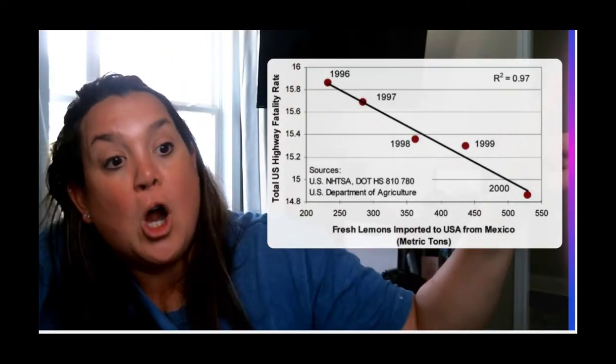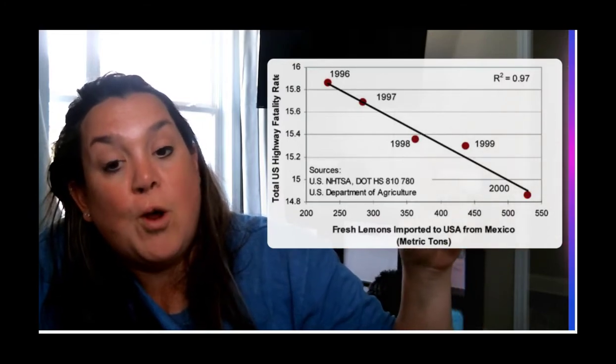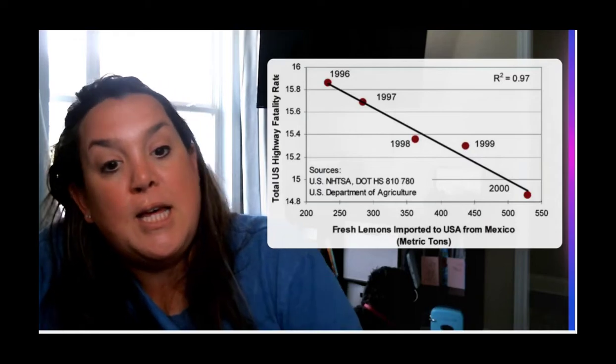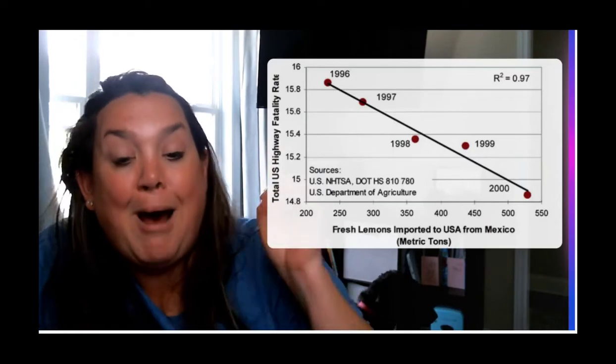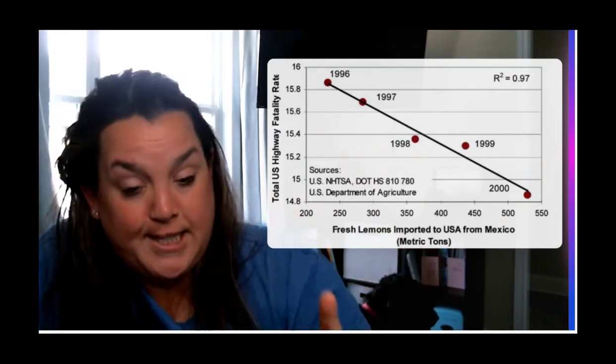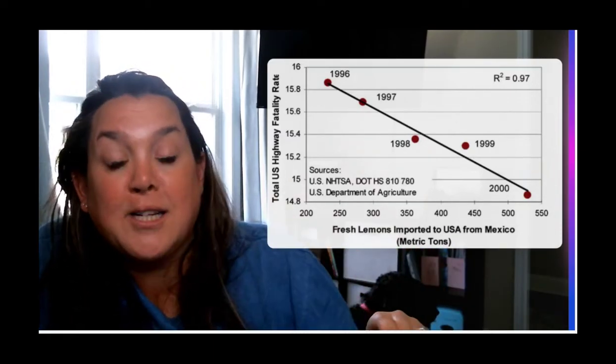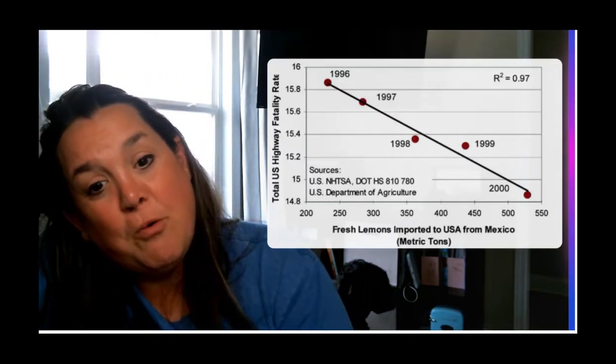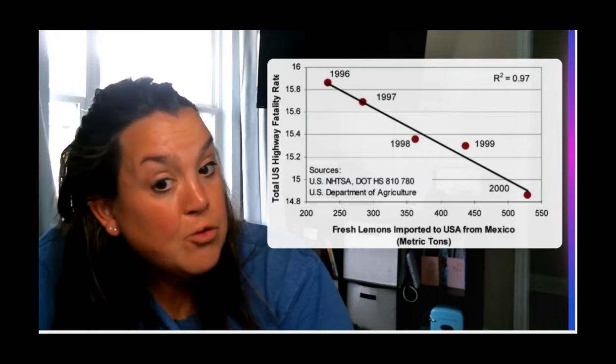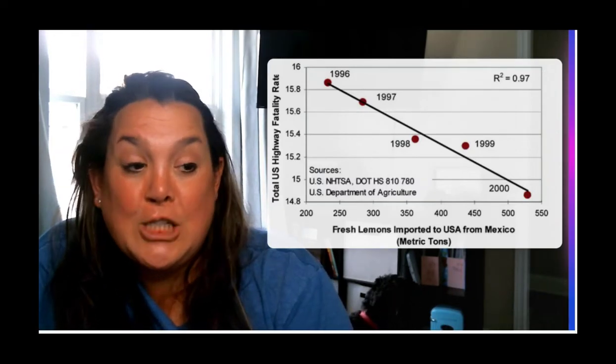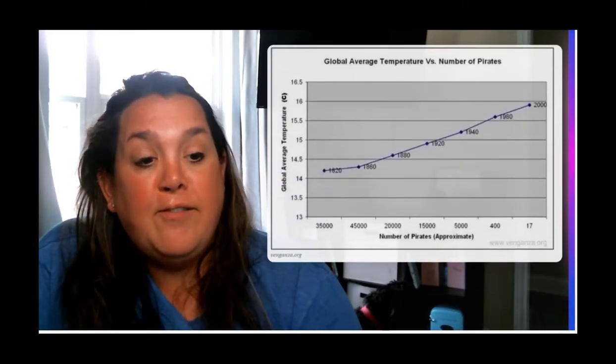R squared is going to be the proportion of variability that's explained in the fatality rate by the straight line model with lemon sales. So again, I do not expect that lemon sales are causing or making the fatality rates on highways decline. Associated, correlated, but not causing. It's not a causation.